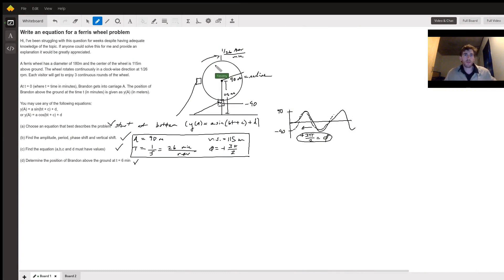Okay, so with this problem, pretty simple. When it comes to choosing an equation that best describes the problem, you need to think about sines and cosines. So what's the sine of pi over 2 and negative pi over 2 or 3 pi over 2? It's 1 and negative 1.